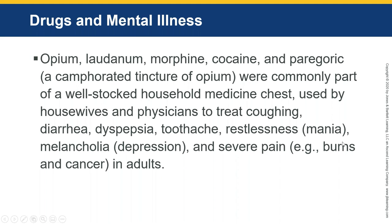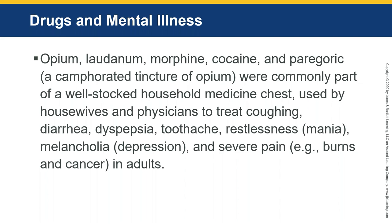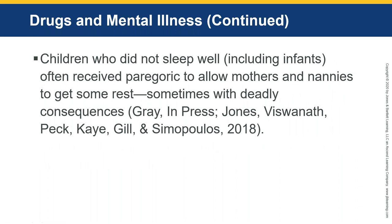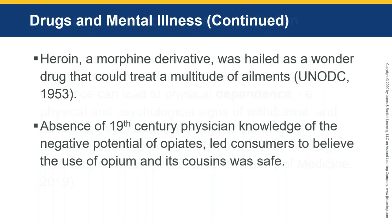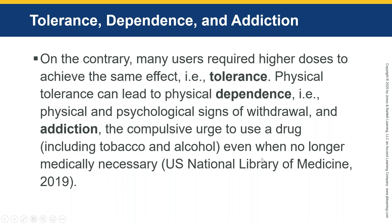Before 1924, opium, laudanum, morphine, cocaine, and paregoric — a tincture of opium — were commonly part of a well-stocked household medicine chest. Housewives and physicians used them to treat coughing, diarrhea, stomach upsets, toothaches, restlessness, and severe pain. They even used it for children who didn't sleep well, sometimes with deadly consequences. Heroin, a morphine derivative, was hailed as a wonder drug. The absence of physician knowledge of the negative potential of opiates led consumers to believe their use was safe. Many users required higher doses to achieve the same effect — tolerance — which led to physical dependence and psychological and physical signs of withdrawal and addiction.